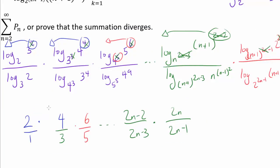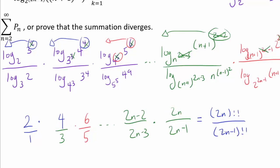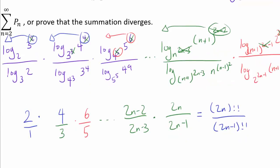Once we take out all the exponents and the logarithms simplify to 1, the product from the numerator is 2 over 1, times 4 over 3, times 6 over 5, and so on — which we can write as (2n)!! over (2n−1)!!. The double factorial of an even number 2n means multiplying all even numbers from 2 to 2n, and the double factorial of the odd number 2n−1 means multiplying all odd numbers from 1 to 2n−1.